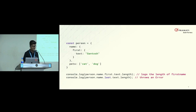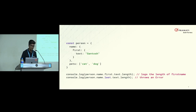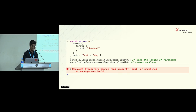Consider this example: I have a person object which has a name and an object called pets. In the first log, I'm displaying the length of the first name. In the second line, I'm trying to display the length of the last name, but it throws an error — 'cannot read property text of undefined' — because when we say person dot name dot last, it gives undefined because it's not there, and then we're trying to access the text property of that undefined, which throws an error. This reminds me of a JavaScript pun — how do you comfort a JavaScript bug? You just console it.